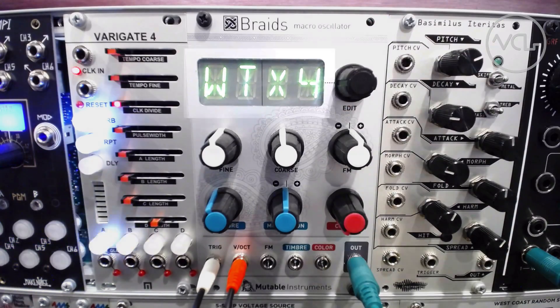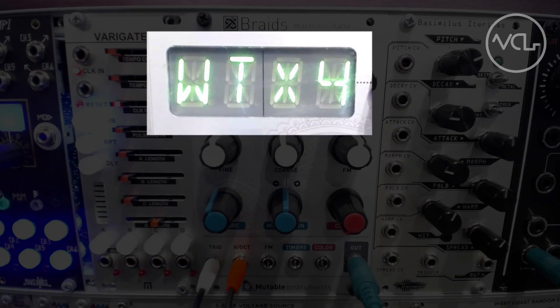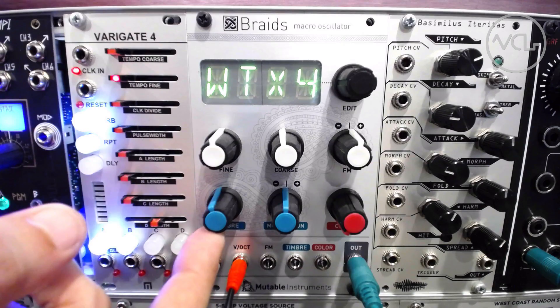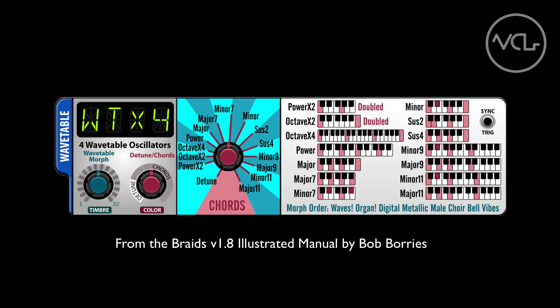The second pseudo-polyphonic option is available on the wavetable x4 page. On this page, the timbre knob morphs between wave shapes, while the color knob fades between 14 different four-voice chord combinations.